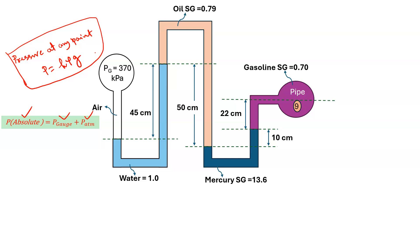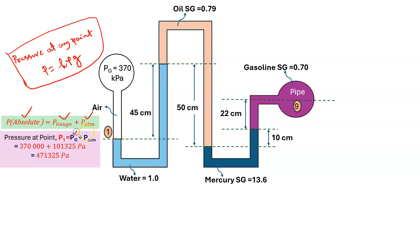The pressure at the air pipeline is 370 kilopascal. We know that air density is very low, so we can neglect the pressure drop due to height. Pressure at point 1 will be P_gauge plus P_atmospheric, giving the absolute pressure. Here P_gauge is 370 kilopascal, so 370,000 Pa, and P_atmospheric is 101,325 Pa.